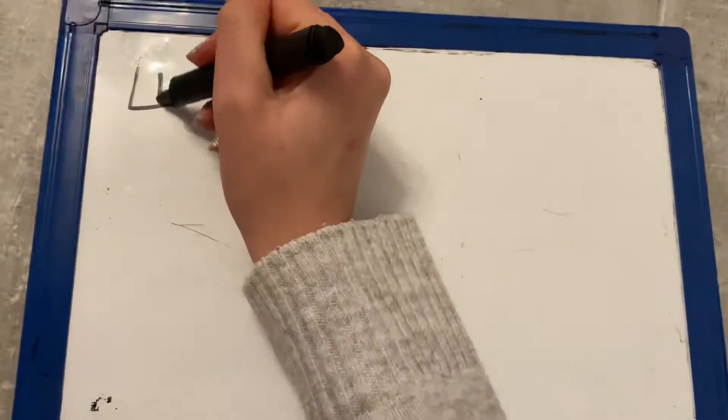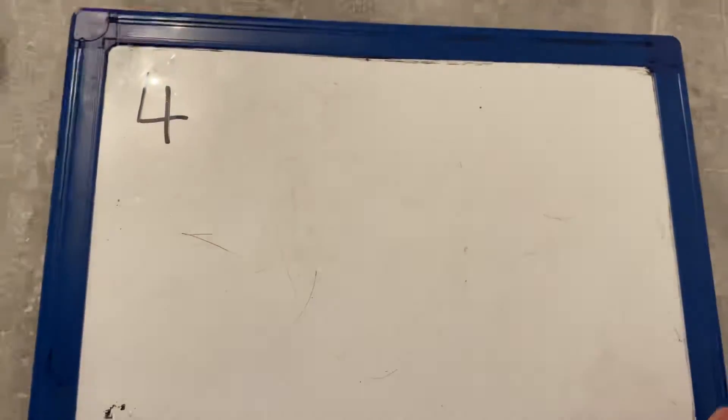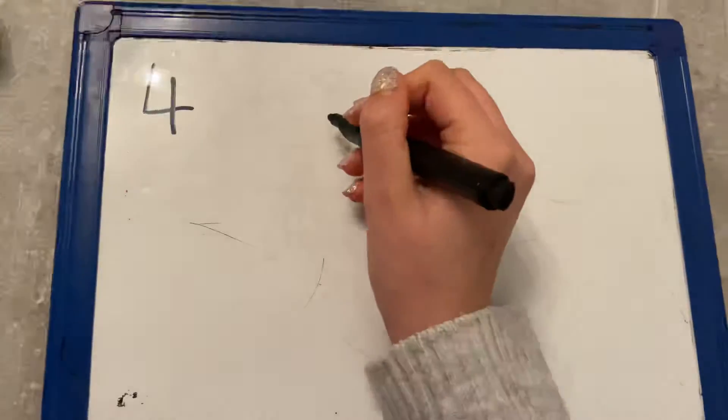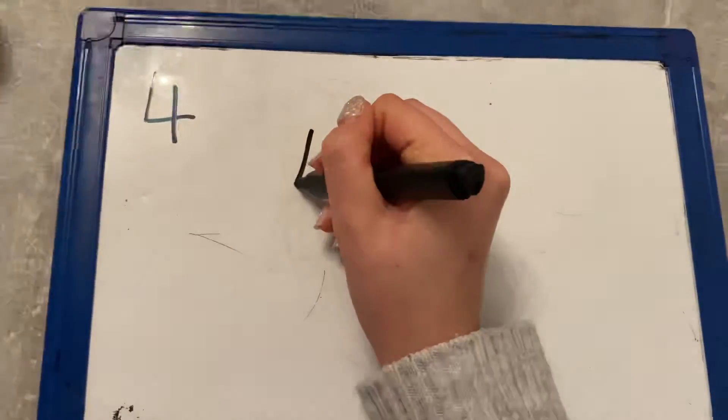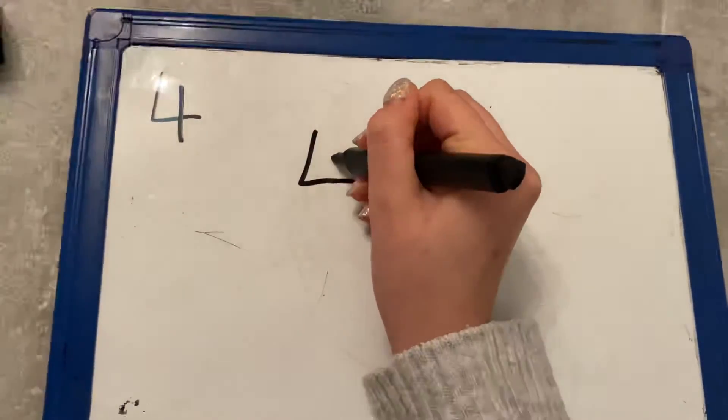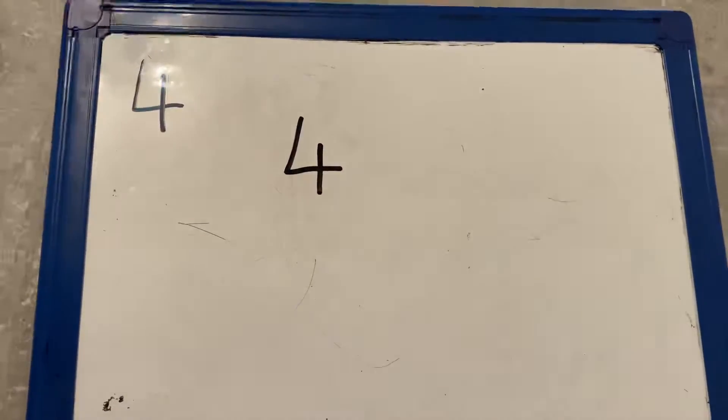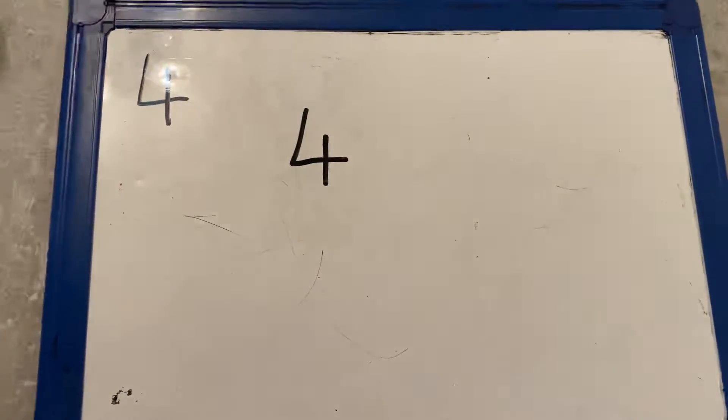Fantastic! The number 4. Now watch me and listen carefully for the rhyme. Down and across and down once more. Now I've made the number 4. Now in the middle of this number,